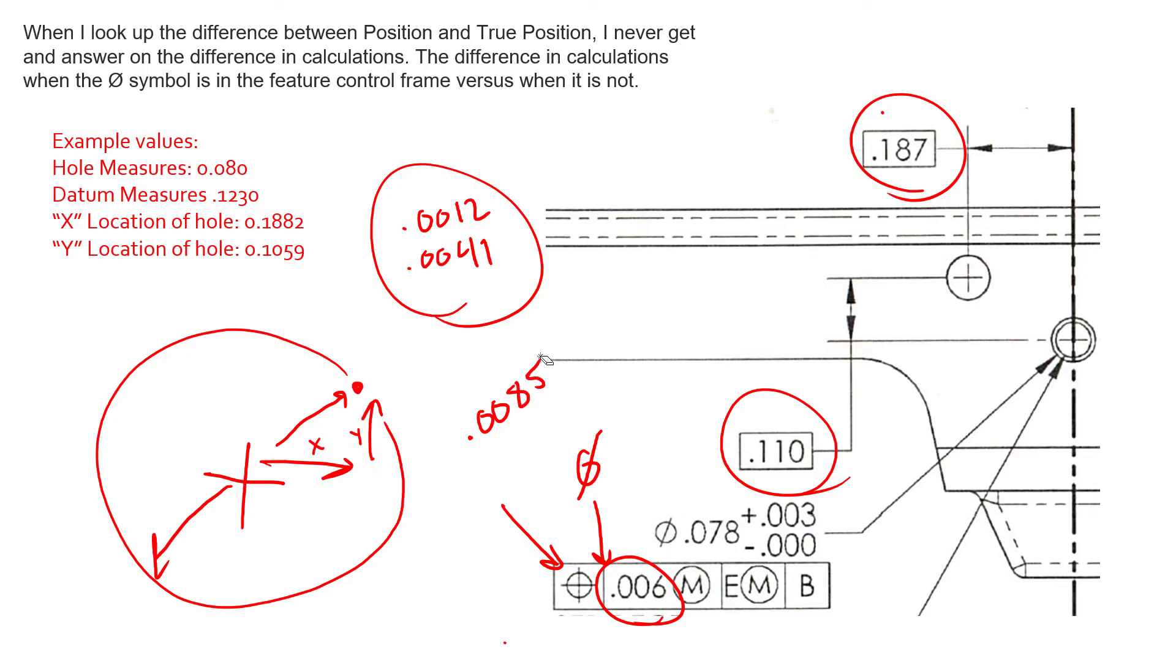So we have a diametric deviation of 0.0085 and our feature control frame is telling us that we have six thousandths position available. 0.0085 is definitely larger than 0.006, so therefore we have a failing location until we consider the bonus tolerance that may or may not be available to us.